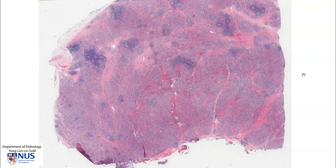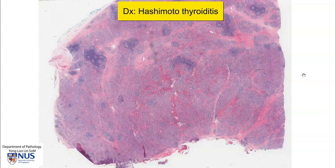Hello, this is a virtual microscopy slide of a case of Hashimoto thyroiditis. Hashimoto thyroiditis is an autoimmune condition where there is a breakdown of self-tolerance, and so there is immune-mediated destruction of the thyroid parenchyma. This can eventually lead to hypothyroidism.